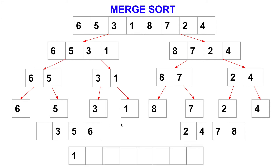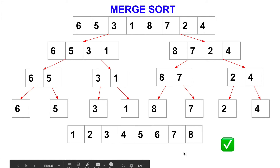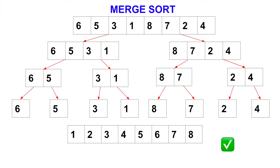So 1 comes down. Now next is 2 — 2 is smaller than 3, so 2 comes down. Next is 3, then 4. Compare 5 and 7 — which one is smaller? 5. Then 6 and 7 — which one is smaller? 6. Now we'll just copy the remainder. Since one subarray is already empty, we can just copy the remainder of the other into the final array because it's already sorted. Now we got the final output: 1, 2, 3, 4, 5, 6, 7, 8. This is the entirely sorted array. This is how merge sort really works.